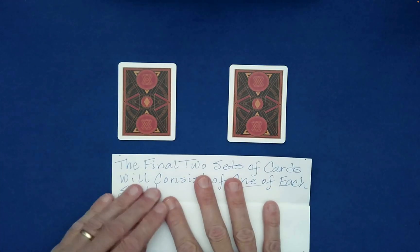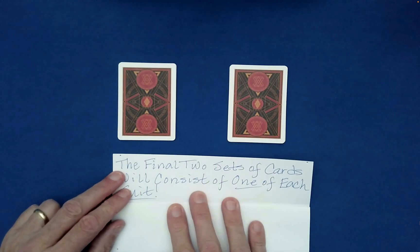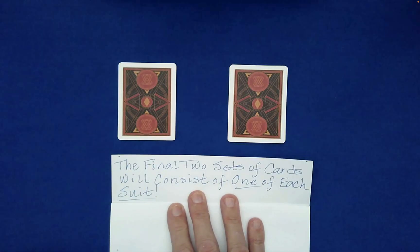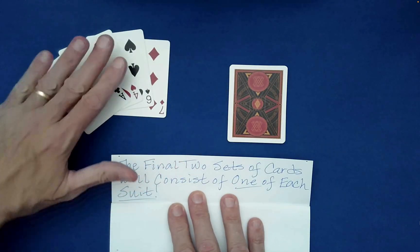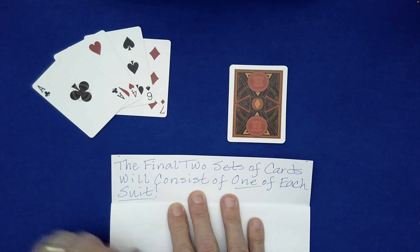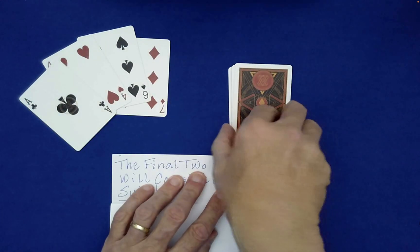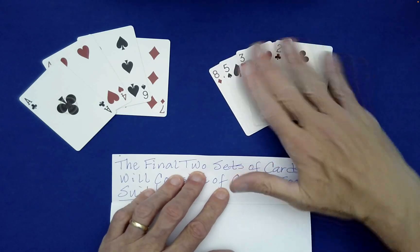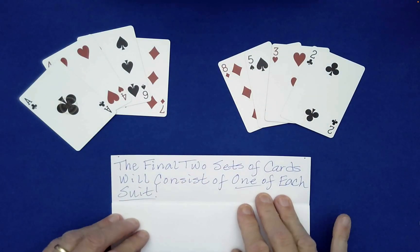Well, first off, it says the final two sets of cards will consist of one of each suit. Is that true? Is there one of each suit here? Well, there's a club, heart, spade, diamond. Okay, that's true there. What about over here? Club, heart, spade, diamond. So that is true.